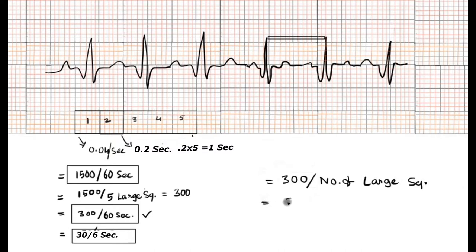Using 300 divided by the number of large boxes plus small squares—here we have two large squares and two small squares. One small square equals 0.2, so 0.2×2 = 0.4. Therefore, 300 divided by 2.4 equals 125 beats per minute.